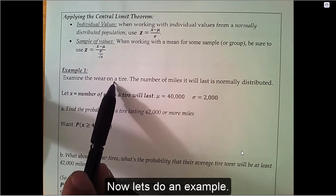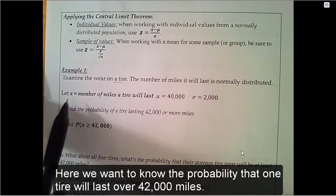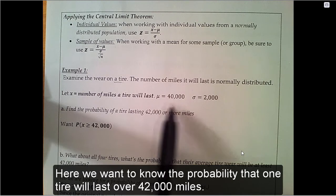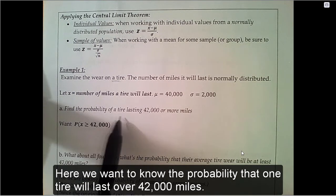When applying the central limit theorem, we use our regular z-score formula for individual values and this other one for a sample of values. Now, let's do an example. Here, we want to know the probability that one tire will last over 42,000 miles.